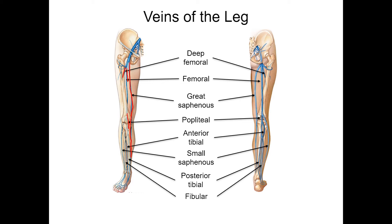If we look at the right picture of the popliteal, we can see the branches better. The top branch is the small saphenous, the second branch is the anterior tibial, the third branch is the fibular, and the continuation of that vein is the posterior tibial.